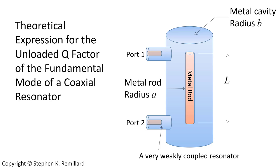In this structure there is a metal rod suspended inside of a cavity that has metal walls. The cavity has radius b, rod radius a, length L, and there are ports to bring electromagnetic field in and to lead signal out, port 1 and port 2.